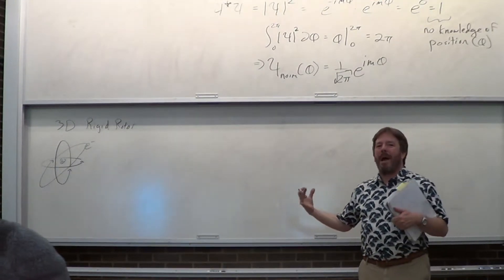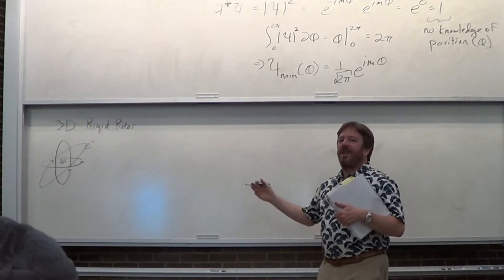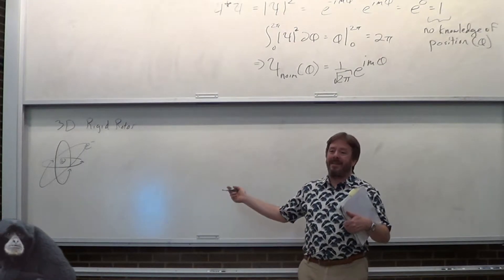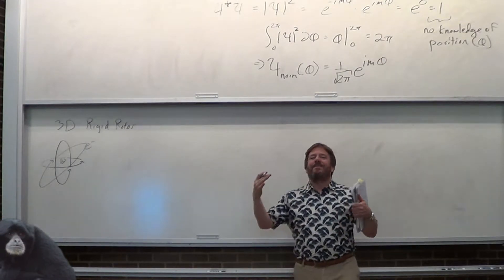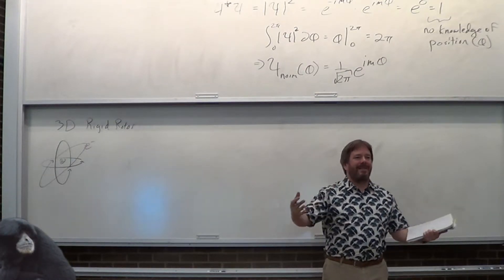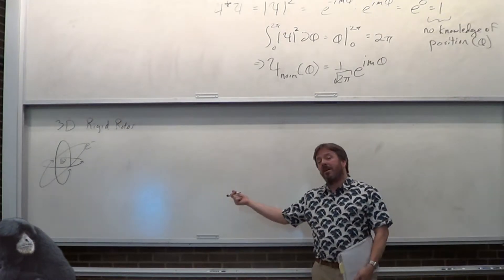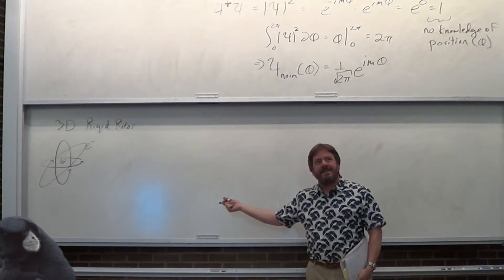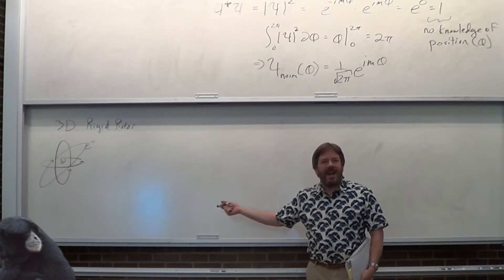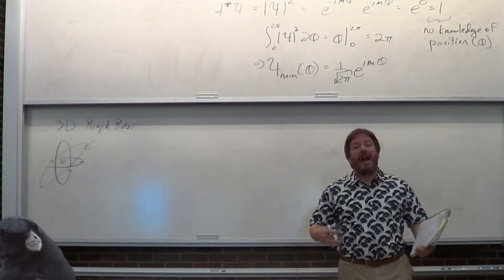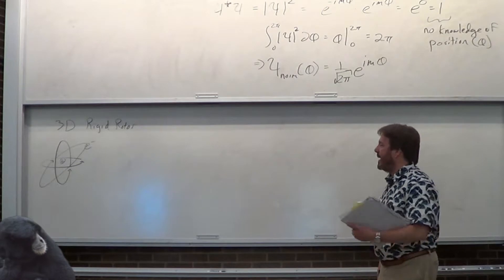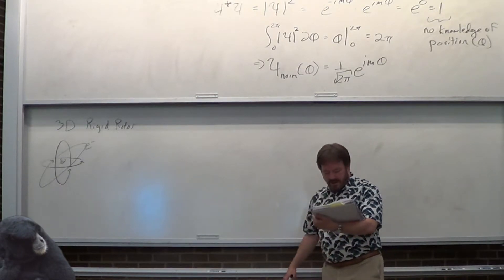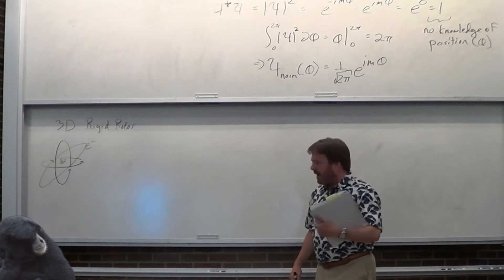The particle is still an electron, but to keep it bounded so it doesn't fly off, I'm going to add a proton. But what's a proton and an electron called? It's a hydrogen atom. And then we actually stop quantum mechanics and go on to that dynamics.